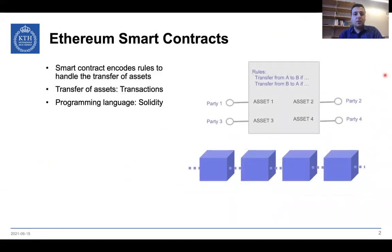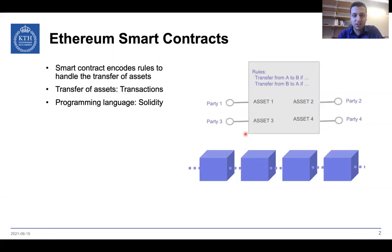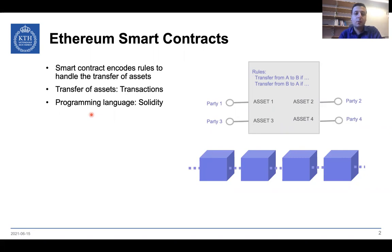The Ethereum smart contracts encode rules to transfer the assets on the blockchain. The transfer of these assets happens using transactions that execute on the blockchain platform we're using, and here we use Ethereum. The smart contracts on Ethereum can be built using the Solidity programming language.